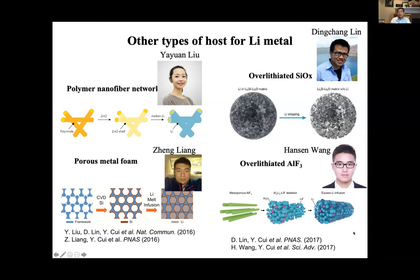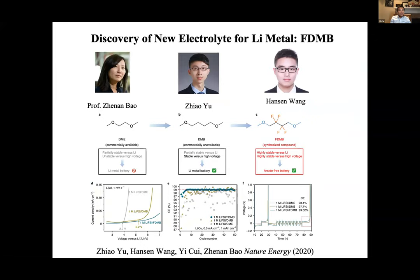With this stable host, we also need a stable interface. Over the years, my group looked into different material coatings to build a stable solid electrolyte interface. We know lithium metal is very reactive and we do need a very robust interface. I want to show you one example of stable interface formation through our new electrolyte design, which we published about a month ago in Nature Energy, in collaboration with Zhenan Bao's lab, led by graduate students Zhiao Yu and Hansen Wang.